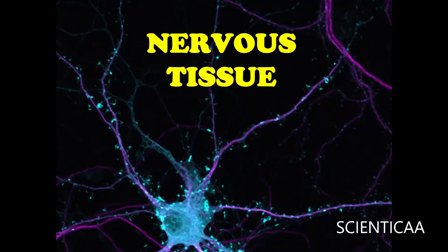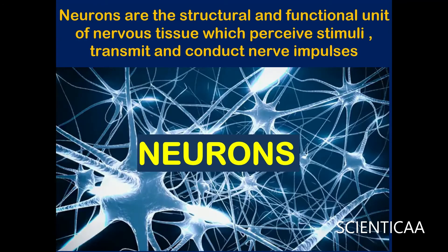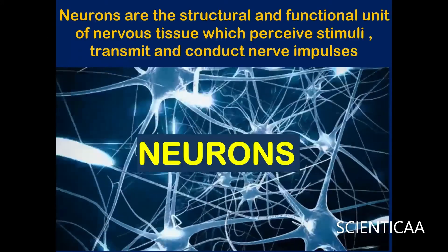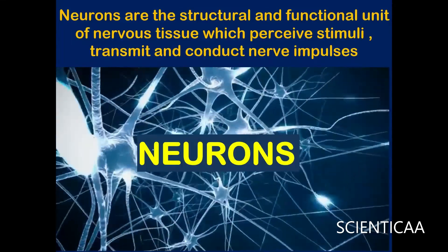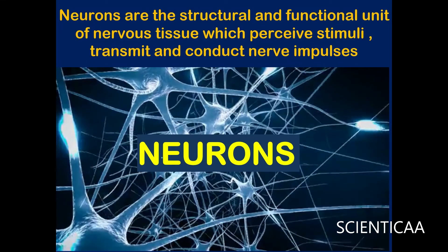The next tissue is the nervous tissue. The basic unit of communication in the nervous system is the nerve cell, also called a neuron. Neurons send signals between the brain, spinal cord, and other body organs via nerve impulses. Nerve cells have appendages called dendrites and axons that connect with other nerve cells to send signals to glands and register sensory stimuli. Neurons are the structural and functional unit of nervous tissue, perceiving stimuli and conducting nerve impulses.